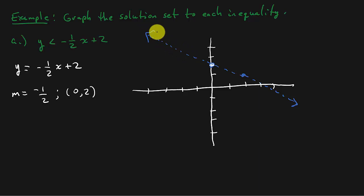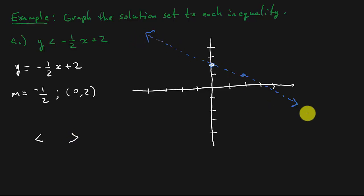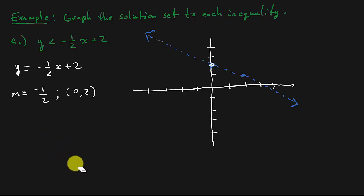The reason we draw it with a dashed line is because of our inequality symbol. If you have less than or greater than, you draw a dashed line — meaning the line is not included in the solution. But if you have less than or equal to, or greater than or equal to, it's going to be a solid line, similar to how parentheses and brackets work in interval notation.